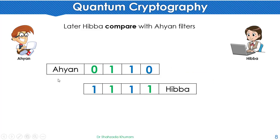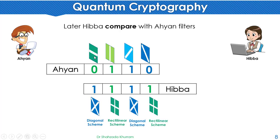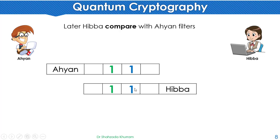To explain with an example: Ayaan sent 0, 1, 1, 0 and Hiba received 1, 1, 1, 1. Later, Hiba compares the filters used. Ayaan sent 0 using a horizontal filter, but Hiba received it through a diagonal filter — so that's wrong. Then Ayaan sent 1 using a vertical filter, and Hiba received it through a rectilinear filter — so that's accurate, giving key bit 1. Then Ayaan sent 1 through a diagonal filter, and when Hiba used a rectilinear filter, the result was wrong and is discarded. The remaining correct bits form the key.